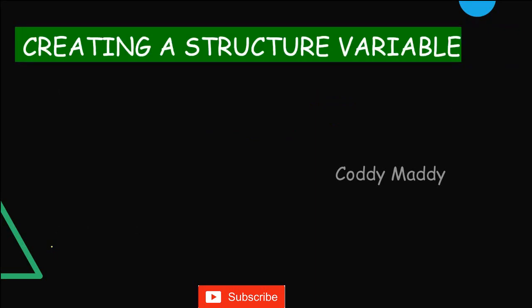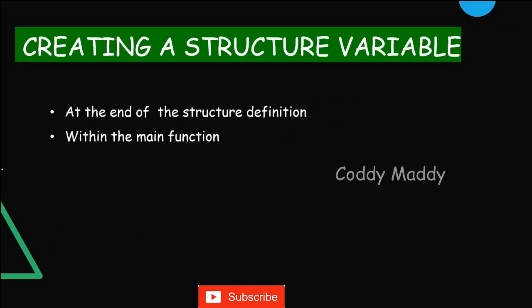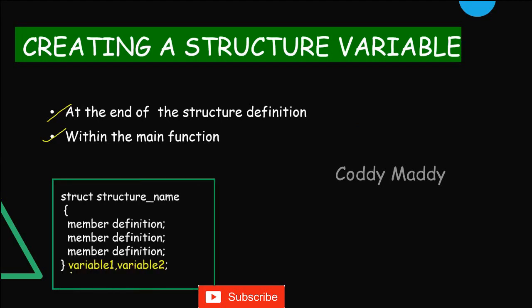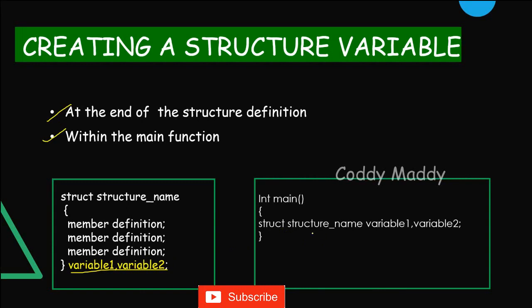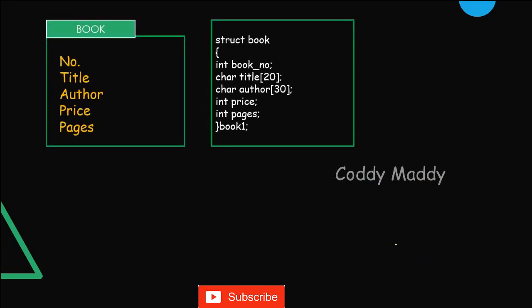After defining a structure, we have to create a variable. The creation of a structure variable can be done in two places: one is at the end of the structure definition — after the curly braces and before the semicolon, you give the variable names; another is within the main function. Inside the main function, you simply write 'struct structure_name variable1, variable2;' — similar to how you'd write 'int a, b;'. This is how we create a structure variable.